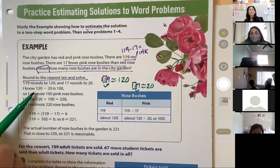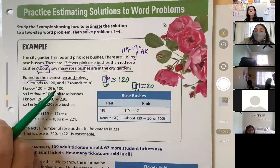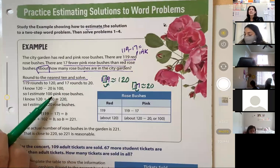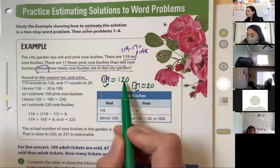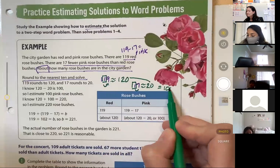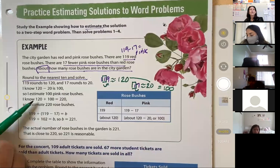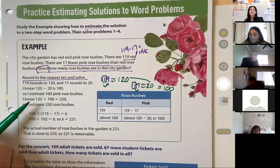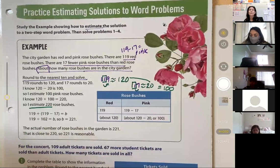So you know that 120 minus 20 is 100. So you estimate 100 pink rose bushes. Can we all agree that 120 minus 20 is 100? We also know that 120 plus 100 equals 220. So you can estimate 220 total rose bushes.